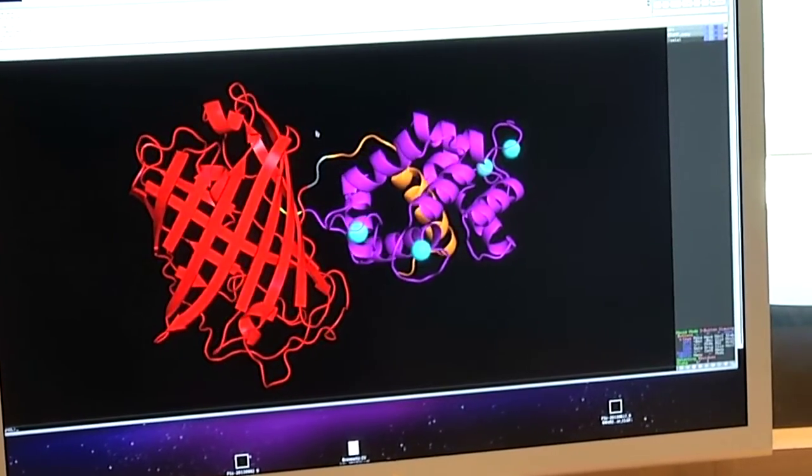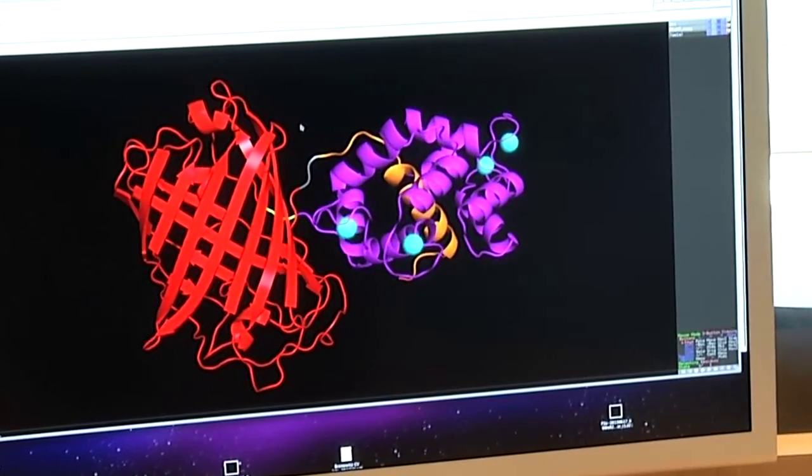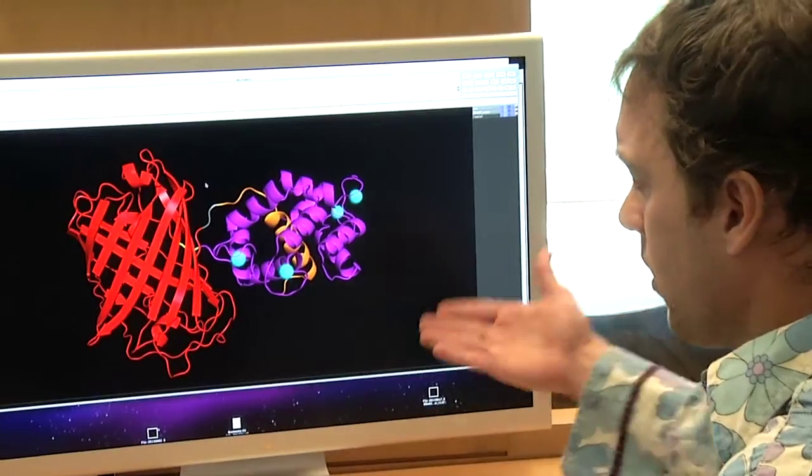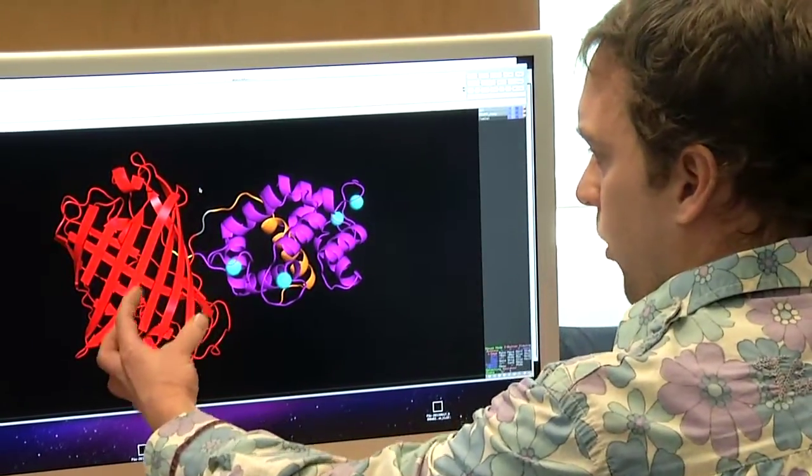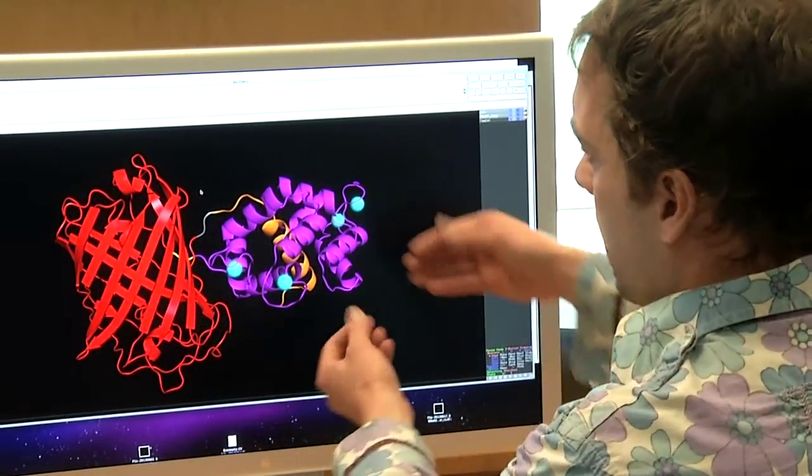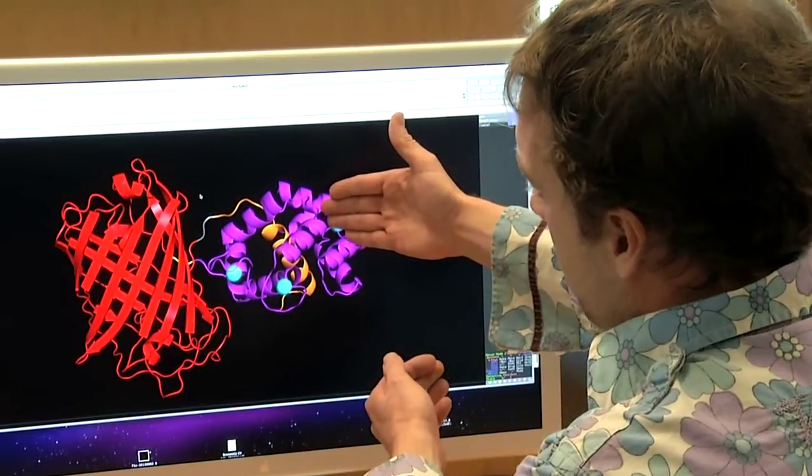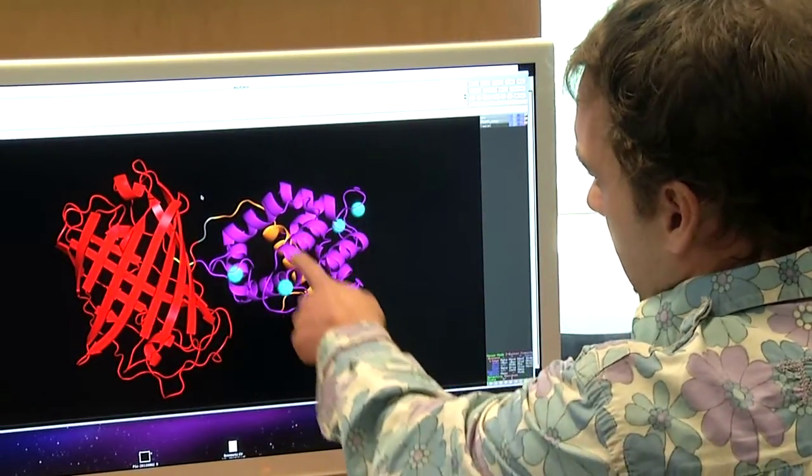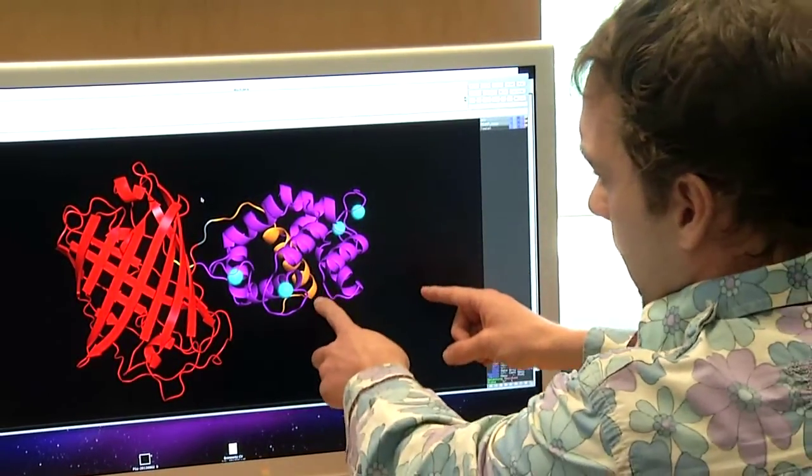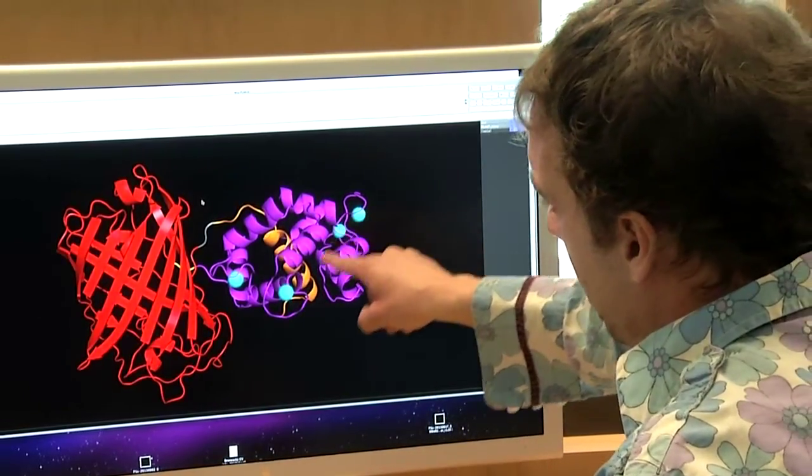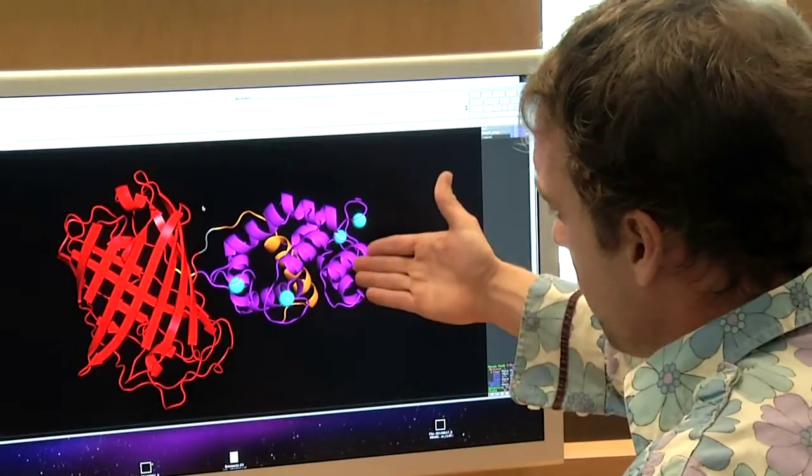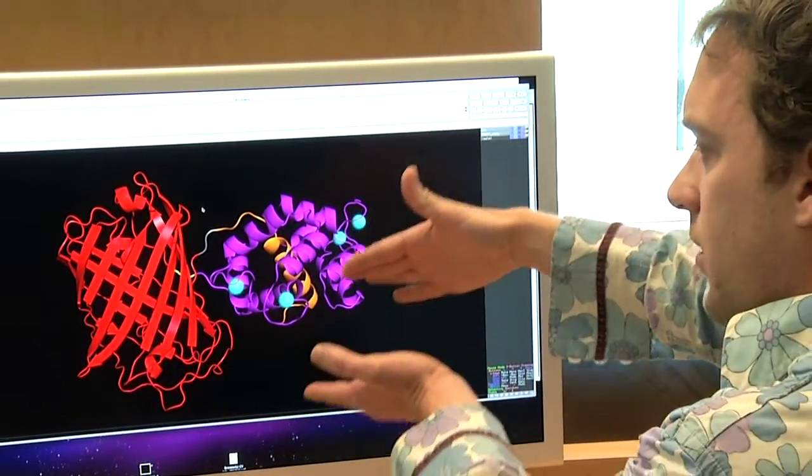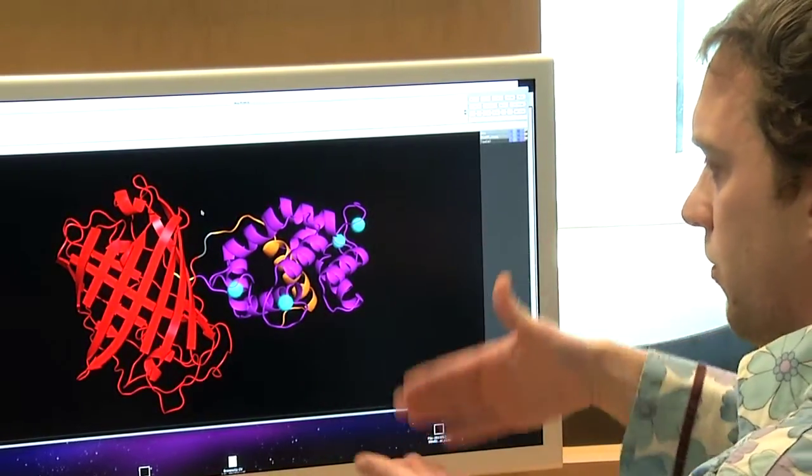We went on the hope that the principles we learned from GCaMP—you circularly permute the fluorescent protein and attach to it a calcium binding protein, and then another peptide that binds to that only when the four calciums, shown in cyan, bind—sort of zips up the fluorescent protein, making it brighter.